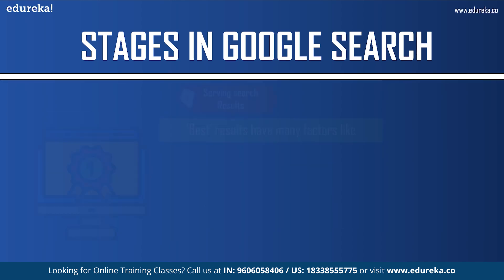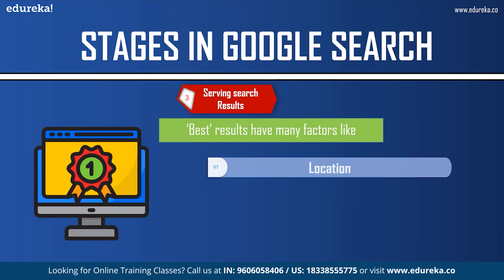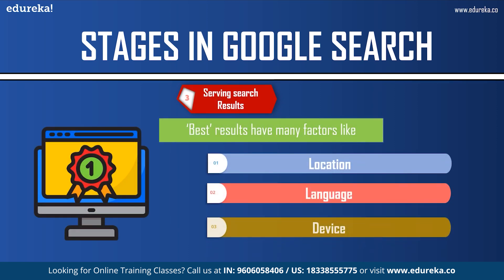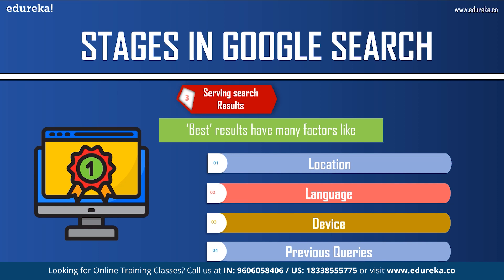The final step is serving search results. When a user searches on Google, Google tries to determine the highest quality results. The best results depend on many factors including the user's location, language, device — whether desktop or phone — and previous queries. For example, searching for 'bicycle repair shop' would show different answers to a user in Paris than to a user in Hong Kong. Google doesn't accept payment when ranking is done algorithmically.